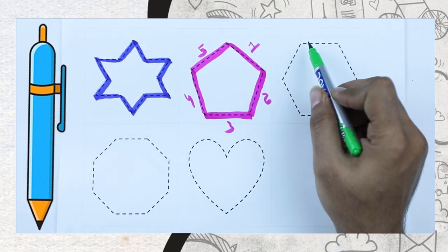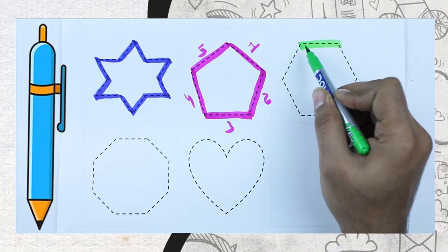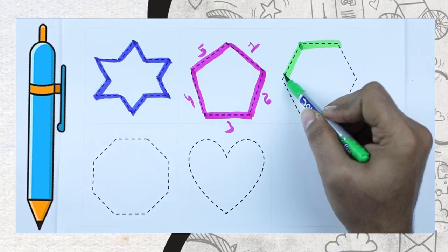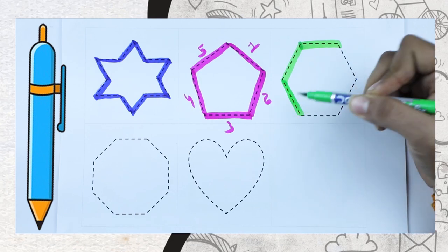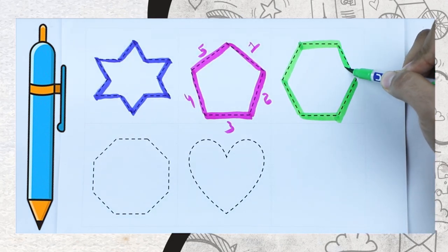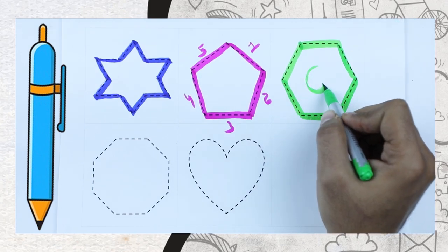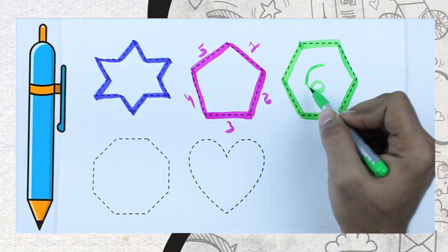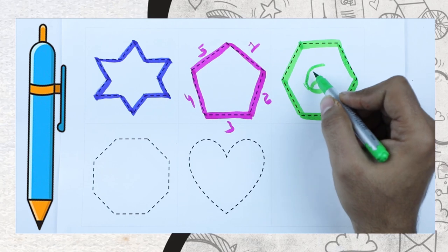Now hexagon with green color. One, two, three, four, five, six. Hexagon have six lines. It's called hexagon.